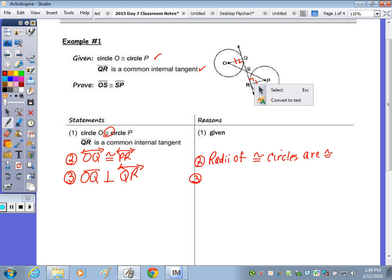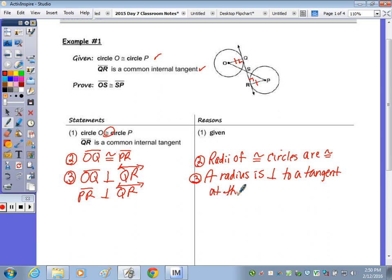So, radius OQ is perpendicular, and then PR is perpendicular to QR. So, that just brings my attention to here. The radii are segments, not lines, even though a segment is part of a line. Okay, so PR is perpendicular to QR.